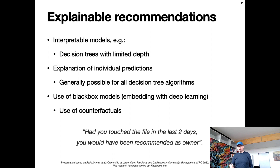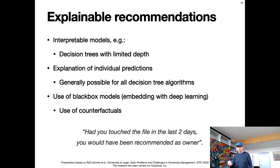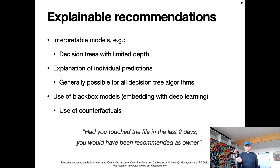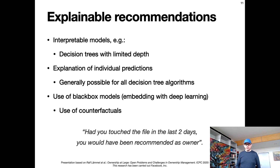This is usually possible for decision tree algorithms on the grounds of feature importance. If you use a black box model that's inherently not interpretable — maybe deep learning — you can still recover some degree of explainability by using counterfactuals. Basically, you play with the model by changing features a little bit and see whether this drastically changes the prediction. For example: 'Had you touched the file in the last two days, you would have been recommended as owner,' compared to all the other candidates in scope. This also gives some level of explainability.